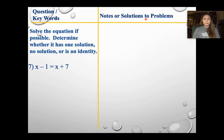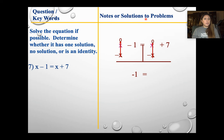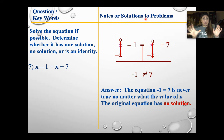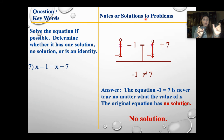If we do this problem — x minus 1 equals x plus 7 — I'm going to get rid of my x's first. I'll subtract x from both sides, and I get negative 1 equals 7. Is that true? No, it's not. Negative 1 does not equal 7. Since that is not true, no matter what number I put in for x, it will never give me a true statement. That means there is no solution that will ever make this a true statement. If you get a number equals a different number, that's a no solution.